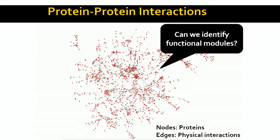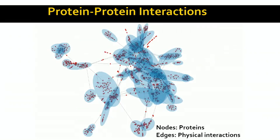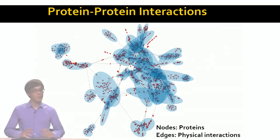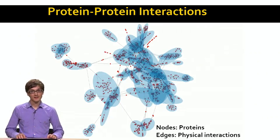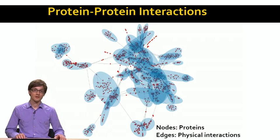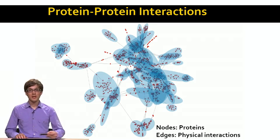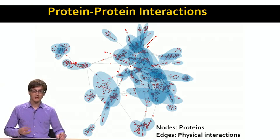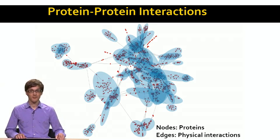So if I have a protein interaction network, imagine I want to go in and detect functional modules — sets of proteins that work together in a cell. The way I would want to do this, using the visualization of the network, is to basically use this idea of finding clusters in networks to identify these modules. These modules can actually overlap with each other in the network.